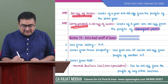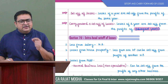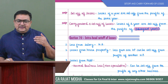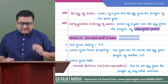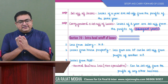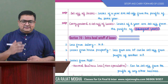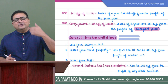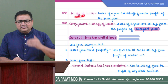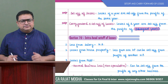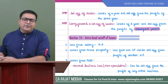Set-off of losses means that if there is a loss in any year and the assessee is setting it off from the same year's profit — that is simply called set-off of losses. What is carry forward? If the assessee could not set-off in that very year, then the assessee can carry forward the losses to subsequent years, where they will be set-off. That is called carry forward and set-off.